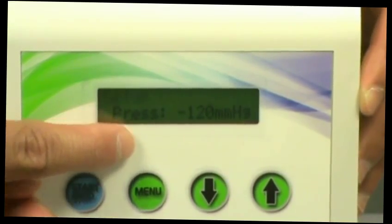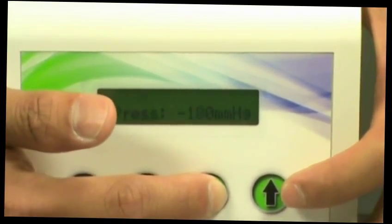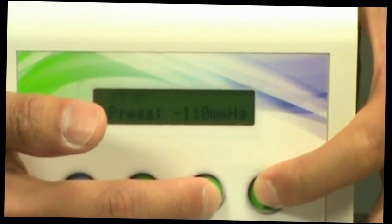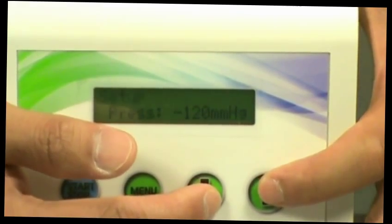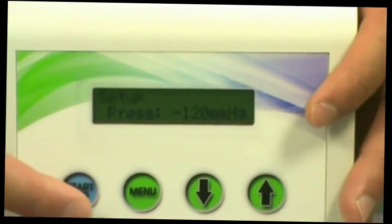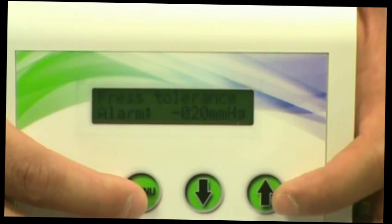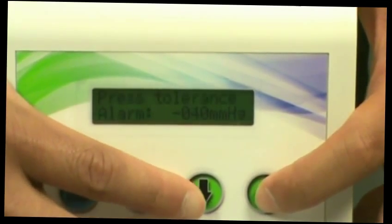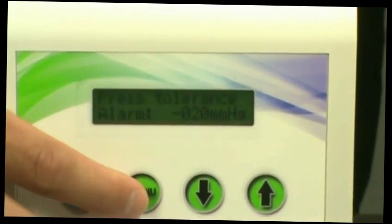First it will be your pressure setting. You can adjust it by pressing the down or up button. Press the menu button. And we will set our pump for 120 millimeters of mercury. Press menu again. It will take you to the pressure tolerance. You can also adjust this by going up or down, pressing the up or down button.